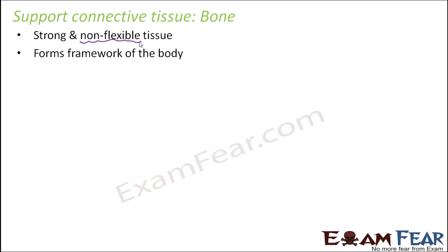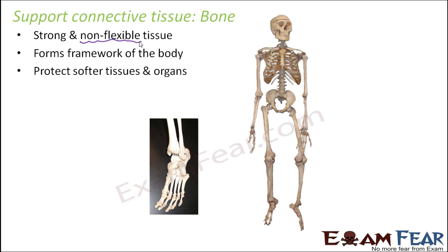Bone forms the framework of the body and protects soft tissues and organs. Since it is the outer framework, the delicate organs and tissues inside can be protected very easily. This is how the bone forms the structure. Basically this is just one bone, but when many such bones are joined together — just look at the feet — do you think it is just one bone? No.